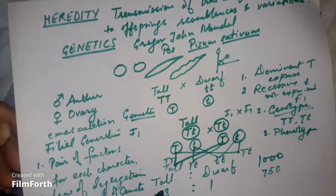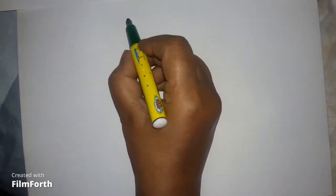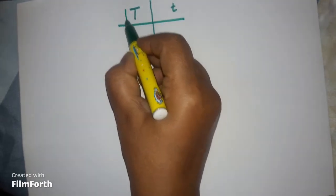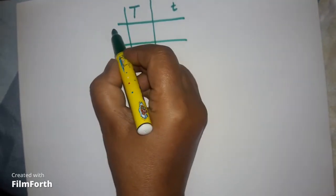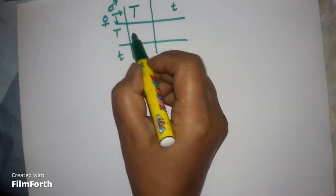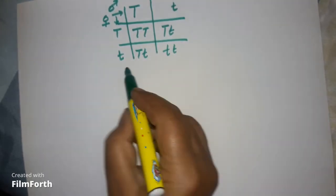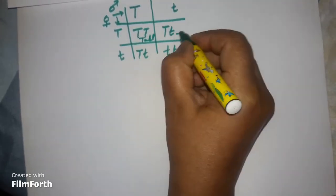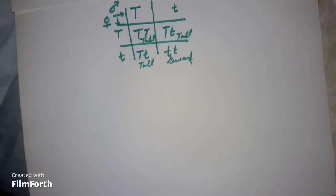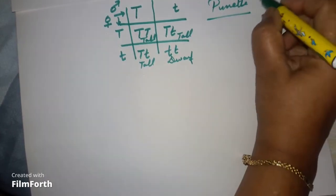This cross can be represented using a Punnett square, developed by a British scientist. One type of gametes is written on one side and the other type on the other side in a checkerboard format. Filling in the square shows three tall and one dwarf — confirming the 3:1 ratio.